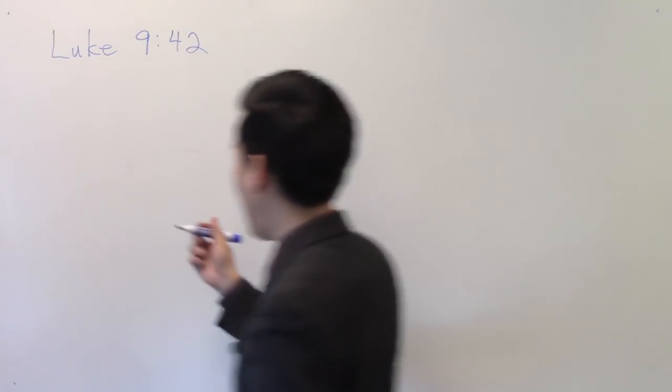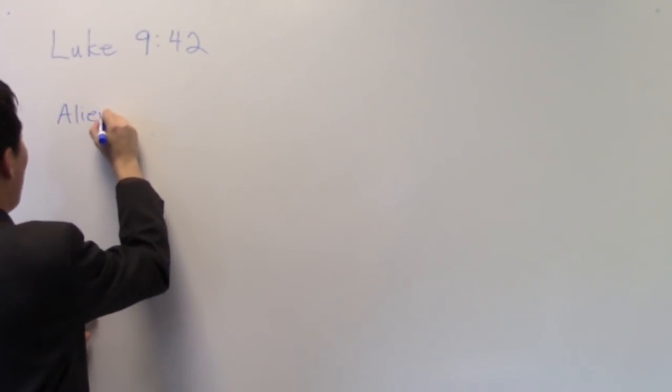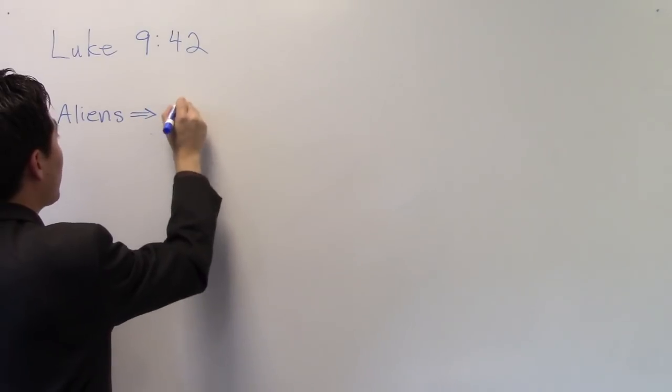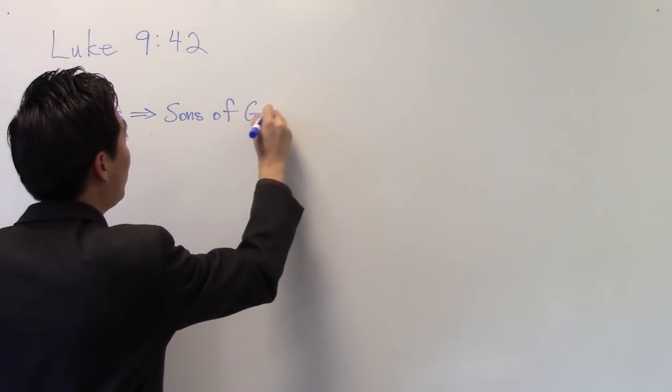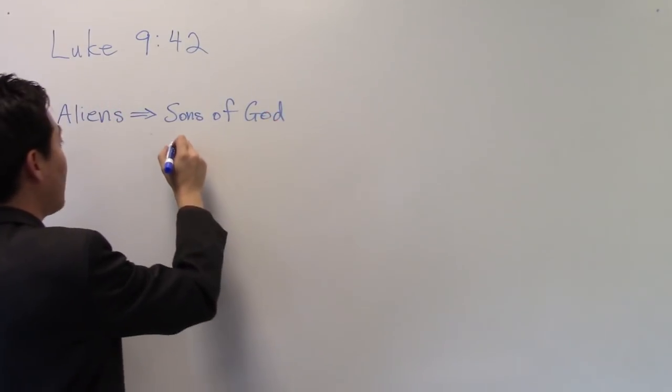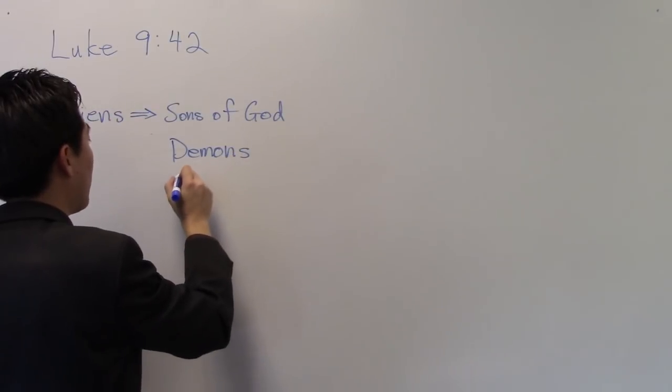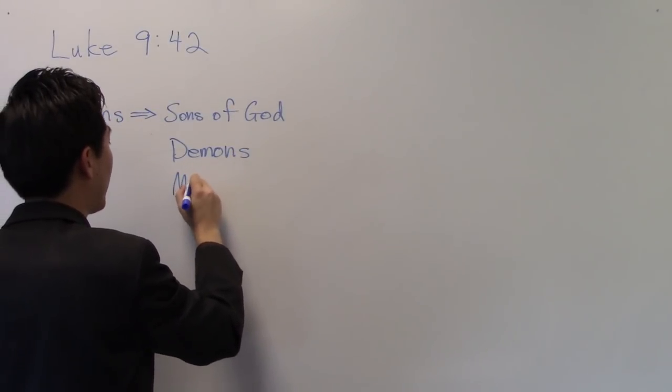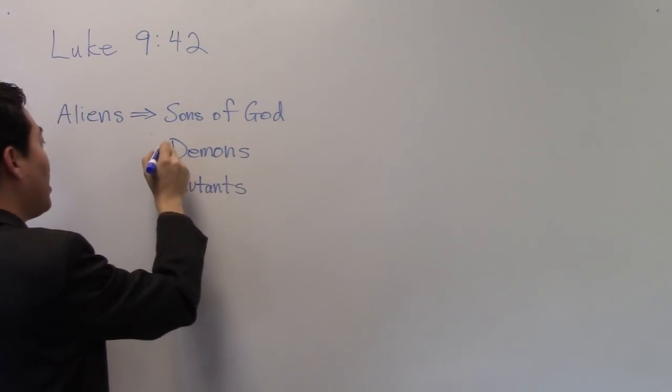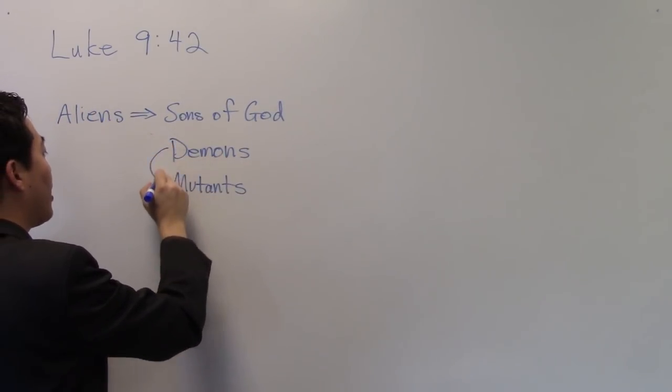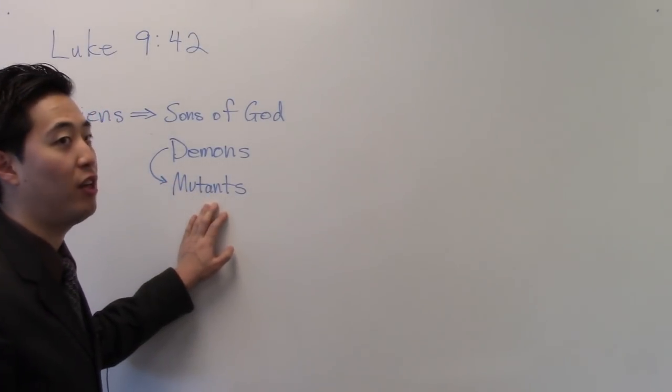Let's first look at this. If you know your Bible, you do know this. The aliens are connected either to sons of God or offsprings. More people lean toward offsprings of the sons of God. What you're going to notice is that demons throughout the Bible is synonymous quite often with mutants.